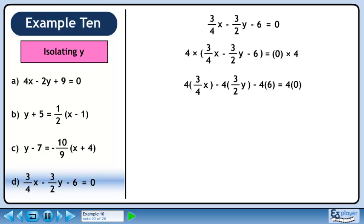Distribute 4 through the brackets. Cancel to reduce the fractions. We now have 1 times 3x minus 2 times 3y minus 4 times 6 equals 4 times 0.